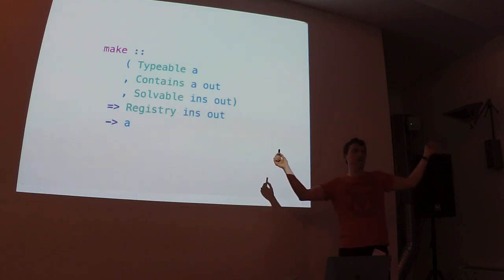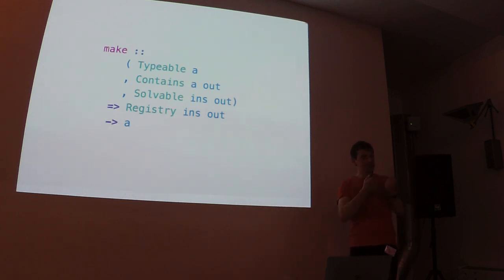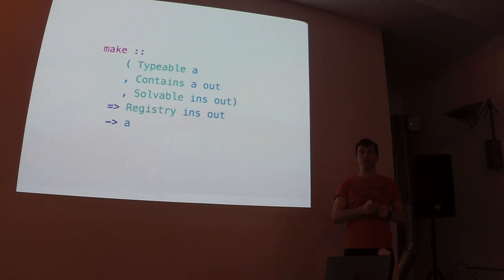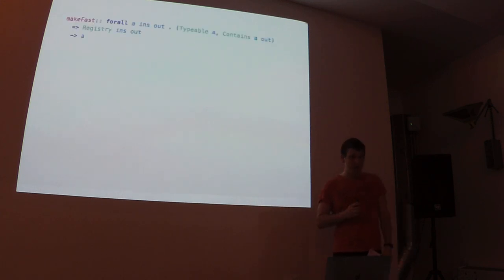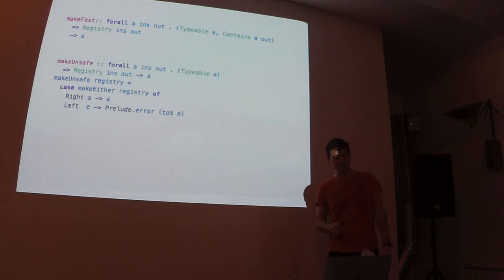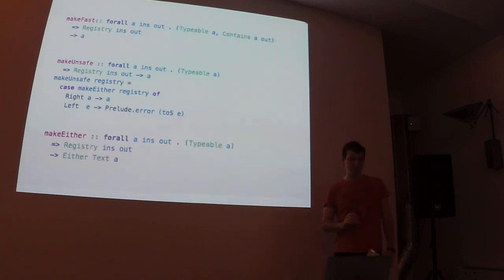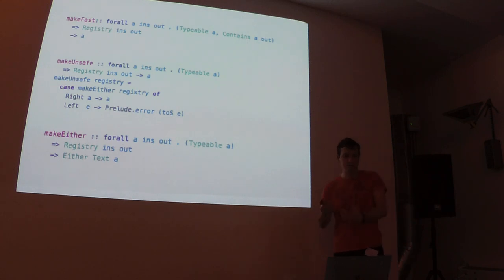There is still an issue with the Solvable type class: it uses type-level lists in Haskell, and it can be slow if you have lots of types. Type-level sets exist in Haskell but are unfortunately too slow — if you have a list of more than seven or eight types it takes forever to compile. There are variants available to lift some constraints: make it fast but unsafe for tests, or return an Either explaining whether you could extract something from the registry or not.